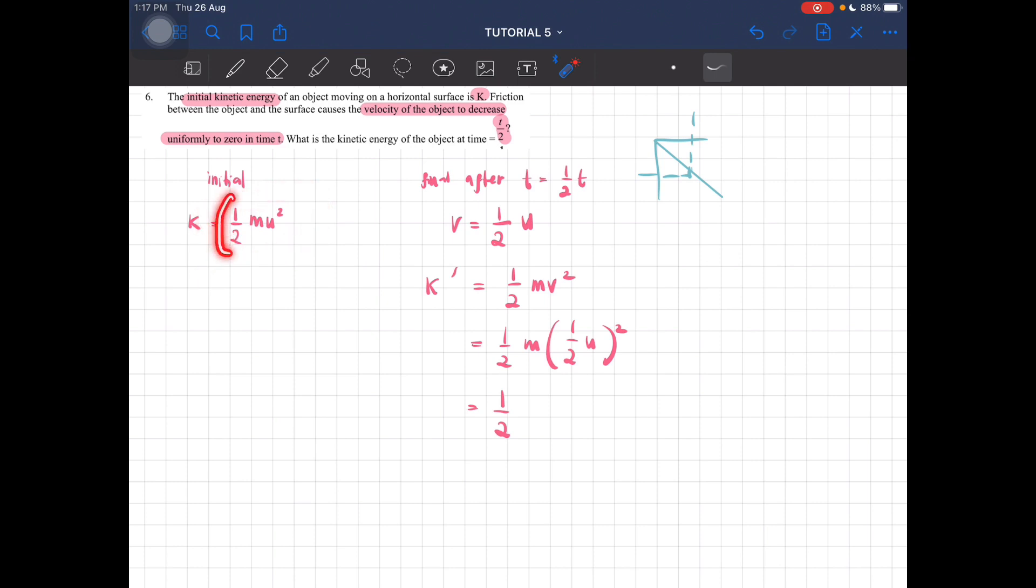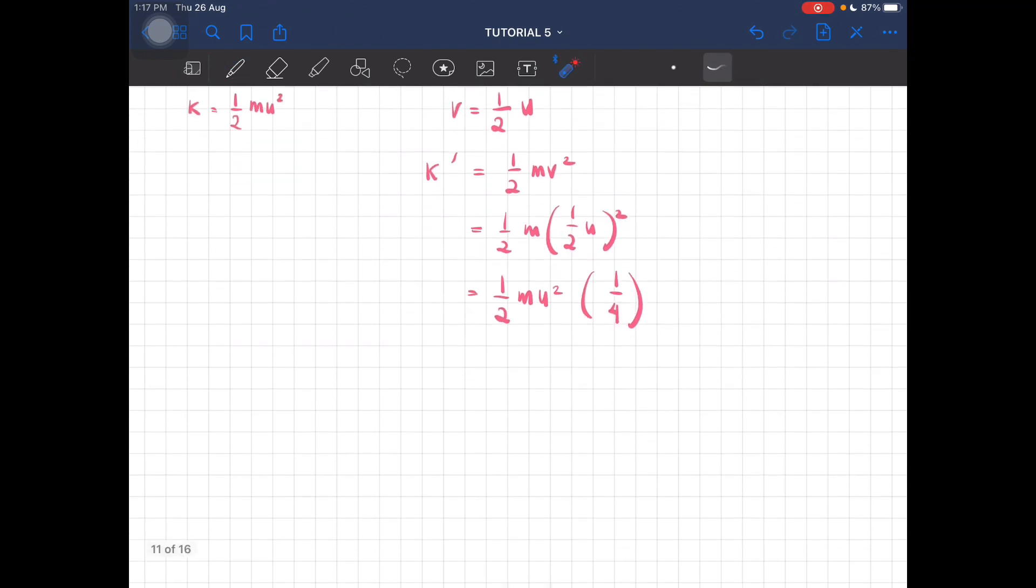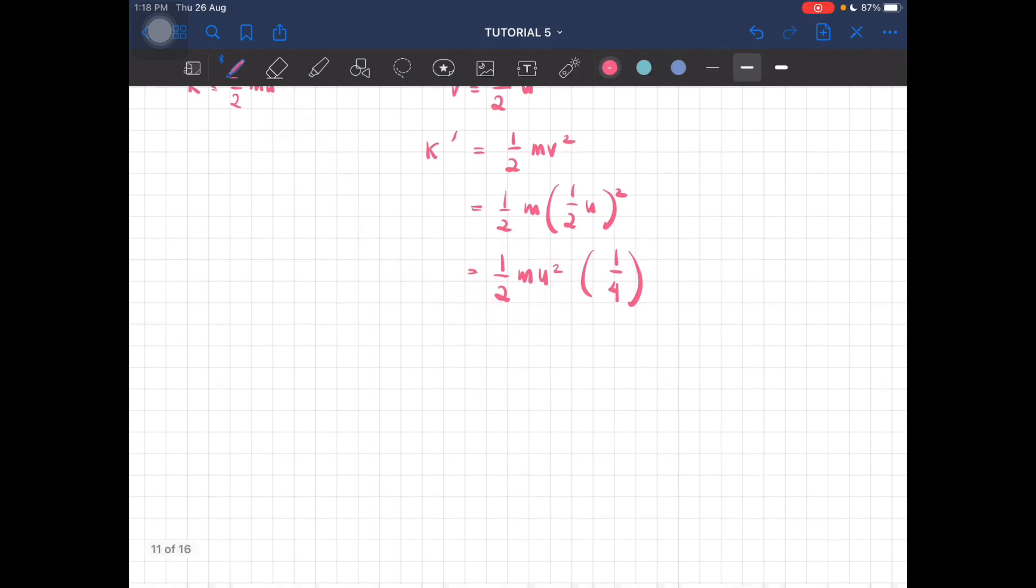Sampai kamu dapat ini, supaya kamu boleh change the k ini, masuk dalam the formula here. So half mv square. So this one is 1 over 4. I separate them because I want to see this equation. This yang sama dengan k here. So what I can do is, if sudah jumpa macam tu, we can just change it to k.